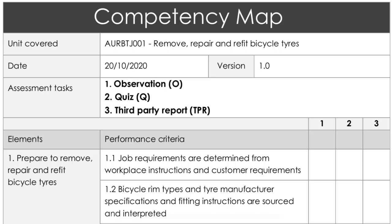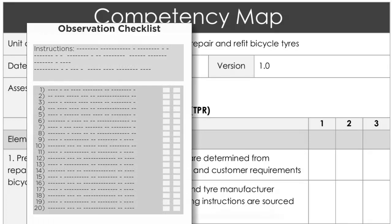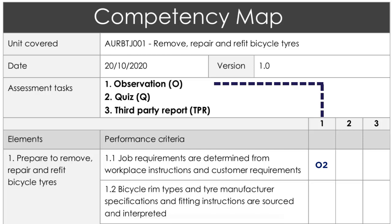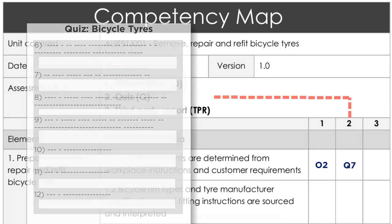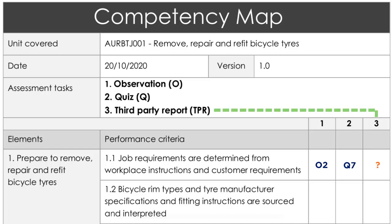There are a few ways you can approach mapping, but the most straightforward way is a painstaking process of stepping through each item in the unit from top to bottom and checking where it's addressed in all of your assessment instruments. Nicole dives right in. The first one — performance criterion 1.1: job requirements are determined from workplace instructions and customer requirements. Nicole looks through her observation checklist and finds it addressed at checklist item two, so she writes O2. She also finds a quiz question on customer requirements at question seven, so she puts Q7. She can't see anything in her third party report covering this criterion specifically, so she leaves it blank.